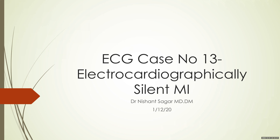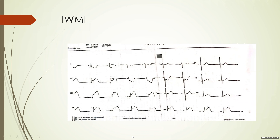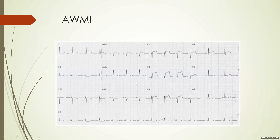Often when we think of STEMIs, we imagine ECGs like this. You can see there is gross ST elevation in leads II, III, and aVF — there is no difficulty identifying this as an ST elevation MI. Since it involves the inferior leads, this is a clear-cut case of an inferior wall MI. Similarly, there is also a clear-cut case of an anterior wall MI, with obvious ST elevation in V1, V2, V3, and V4. Nobody is going to miss such an ST elevation.